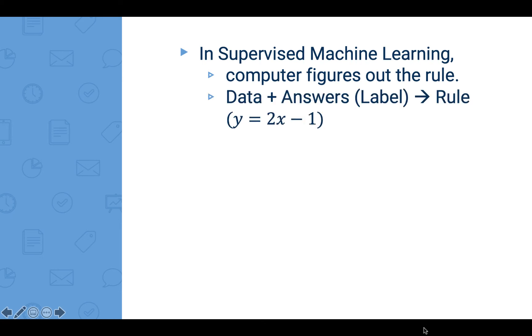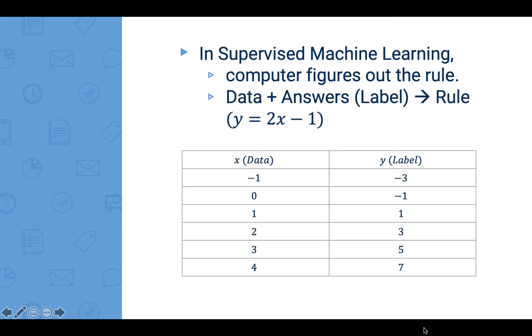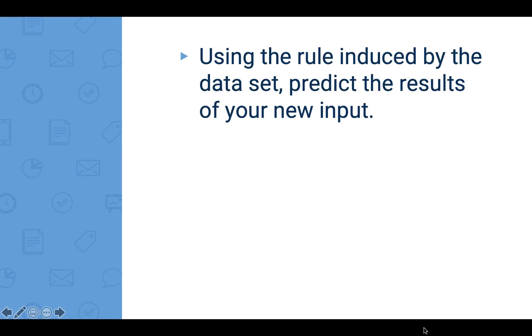In supervised learning, the computer figures out the rule. So with the data and the answer, which we usually call labeled, the computer will find a rule which generalizes the output. So with this rule, the computer is also able to perform prediction.